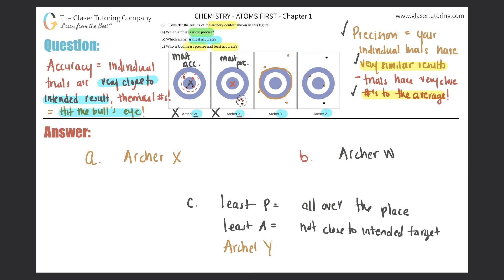Alright guys, this was really fun. I hope you now know the difference between precision and accuracy. It's not any harder than this — precision means closest grouped together, accuracy means closest to your intended target. I hope to see you all in the next question, and you can subscribe so you can see when we're putting out new questions. See you later!